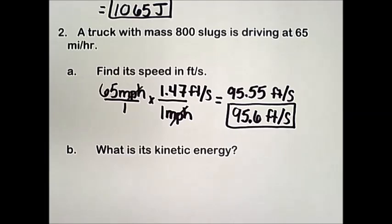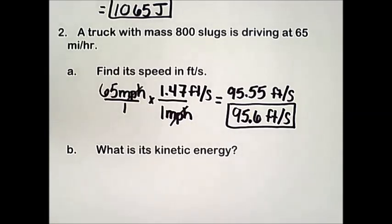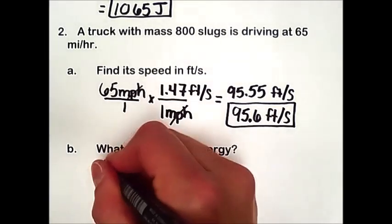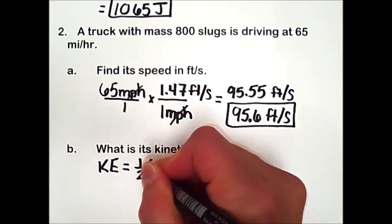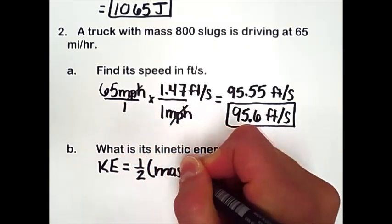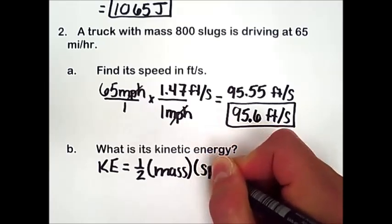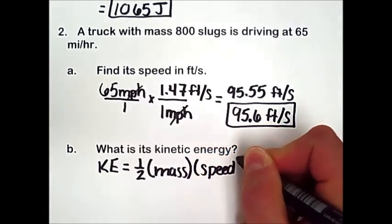Part B asks us, what is its kinetic energy? So again, kinetic energy is equal to 1 half times the mass times the speed squared.